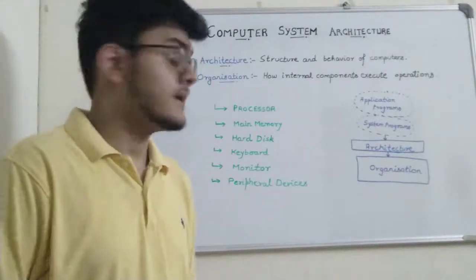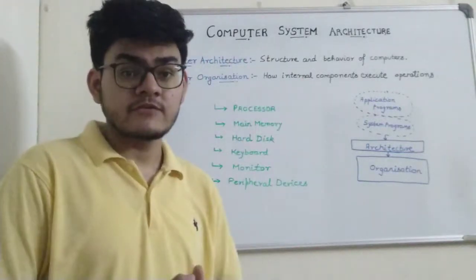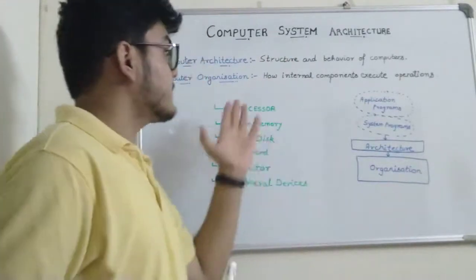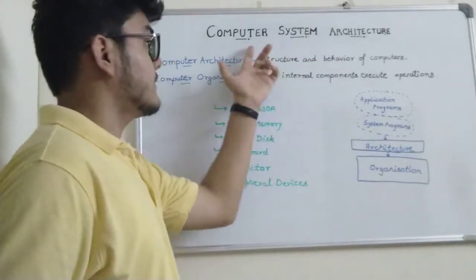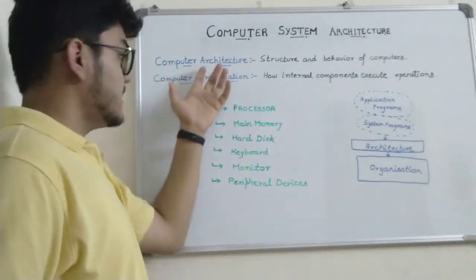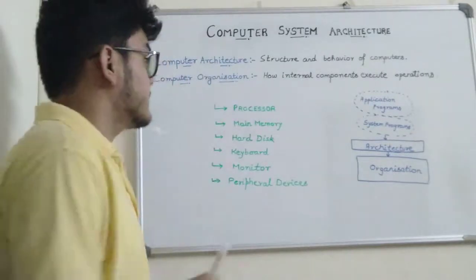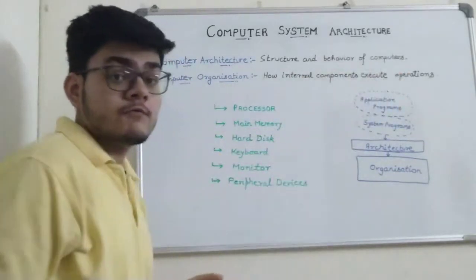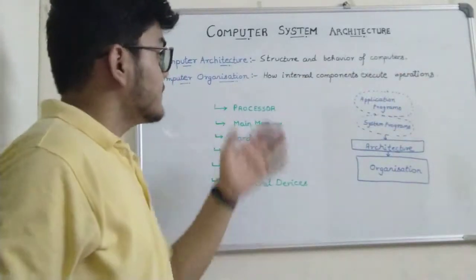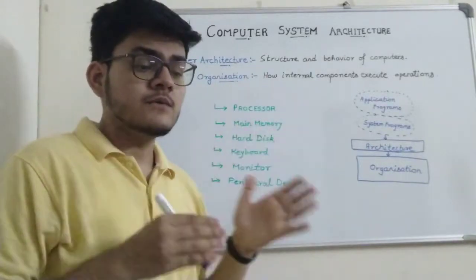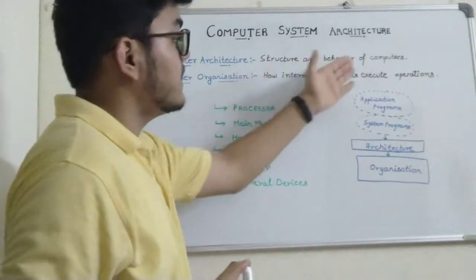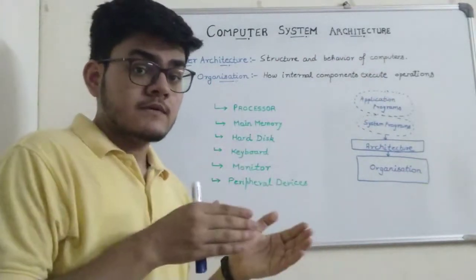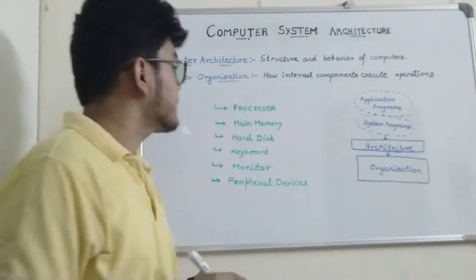In this tutorial we are going to cover computer system architecture. The meaning of computer architecture is the study of the structure and behavior of computers. We analyze the structure and behavior of our computer system and how the computer is doing some operations.